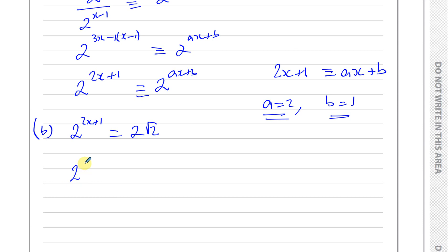2 times root 2 can be written as 2 to the power of something. So 2 to the power of 2X plus 1 equals 2 times 2 to the power of a half. 2 to the power of 2X plus 1 equals 2 to the power of 1 times 2 to the power of a half. When you add the powers, 1 plus a half is 3 over 2.